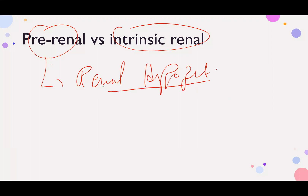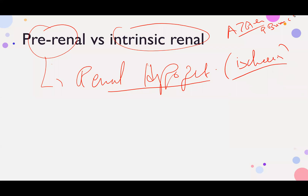Hypoperfusion can come from hypovolemia, medications, or whatever the cause. Pre-renal dysfunction is pre-renal azotemia — azotemia meaning an increase in BUN and creatinine. It can be pre-renal azotemia or intrinsic azotemia.